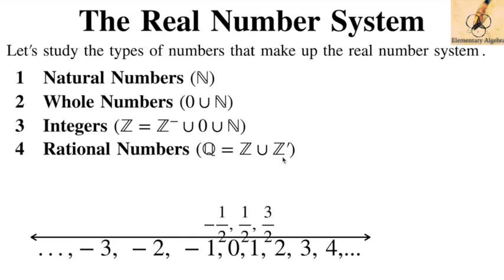Why is it called Z-complement? Because it's the complement of Z — remember your set theory: when you say complement, it means 'not Z.' So when you say integers, if they're not integers, they're fractions. So we have Z and not-Z; if we combine them into one set, we call them the rational numbers.